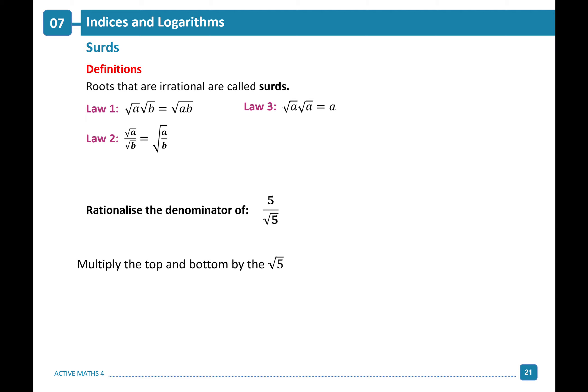To do this, we multiply the top and bottom by the square root of 5 — that is, multiply the top and bottom by the surd on the bottom. This gives us 5 times root 5 divided by root 5 times root 5. Using our surd laws, this simplifies to 5 root 5 divided by 5. Canceling out our 5s, we're left with the surd root 5.